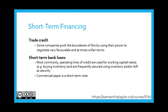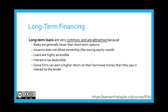Commercial paper is a short-term loan where large, stable companies issue it through a bank and it is traded in open markets. Settlements are done through the bank, and the issuers don't know who the purchasers are.